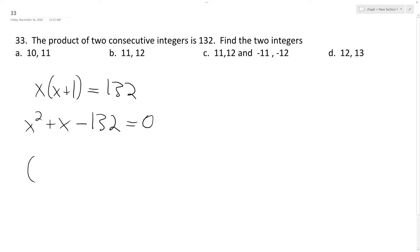So that looks like x plus 12 and x minus 11 in order to get this one more, one positive, and 11 times 12 is equal to negative 132.